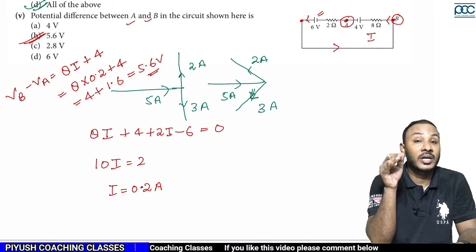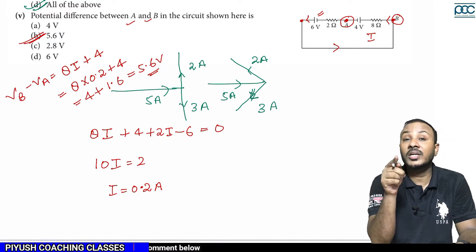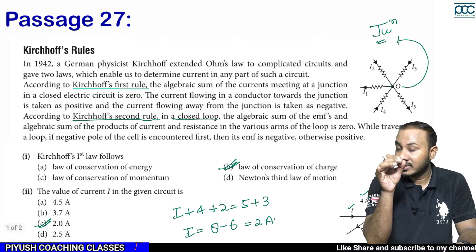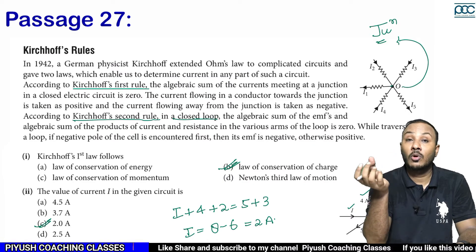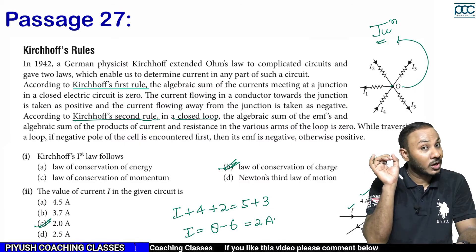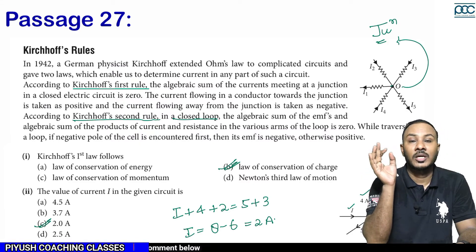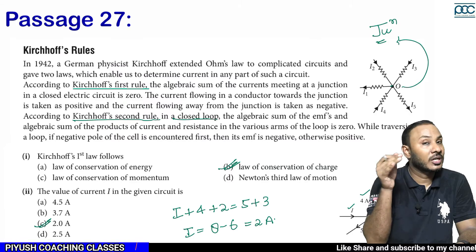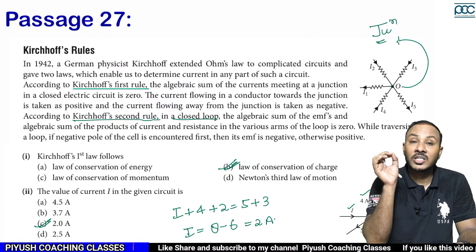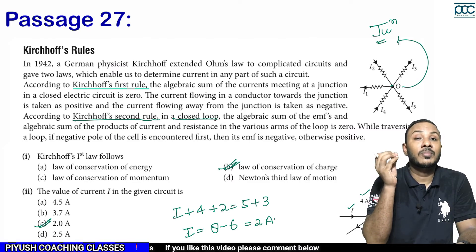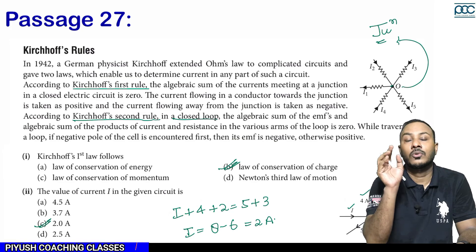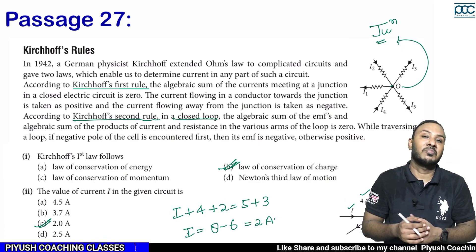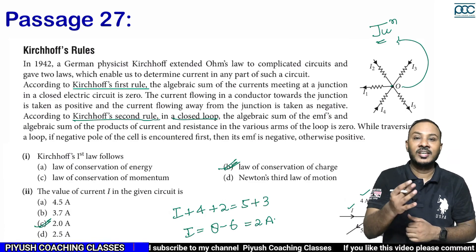Simply put, take the current direction as positive; whichever terminal of the battery comes first, take that sign. Both cases are now clear. Kirchhoff's rules are used for complicated circuits. There are two rules: Kirchhoff's Current Law based on conservation of charge, and Kirchhoff's Voltage Law based on conservation of energy. The first law states that the sum of all EMFs and potential drops in a loop is always zero. These are the two simple points to remember — a very easy passage. Hope it is completely clear. That's all for today's class. Thank you.